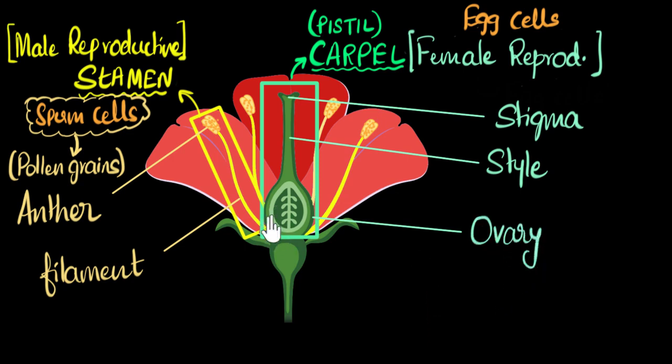It's inside the ovaries, you'll find these structures over here, which you can see, these seed-like structures. They're not seeds yet. But these seed-like structures, they are called ovules. And guess what? It's inside these ovules, you will find the egg cells. The egg cells are found inside these ovules.